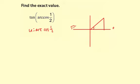And the u will be this angle here. So really what I'm saying is cosine of u equals one half.